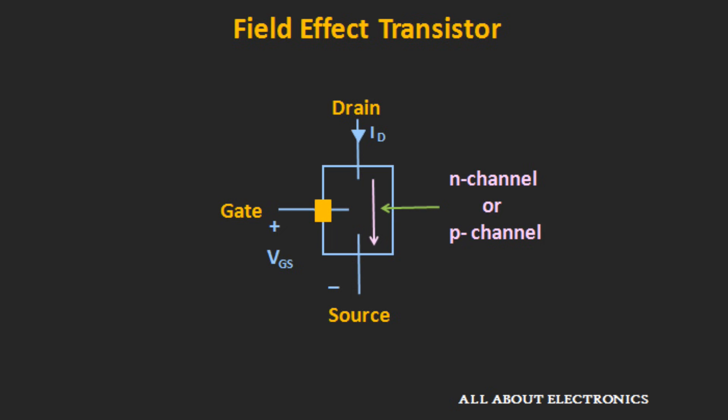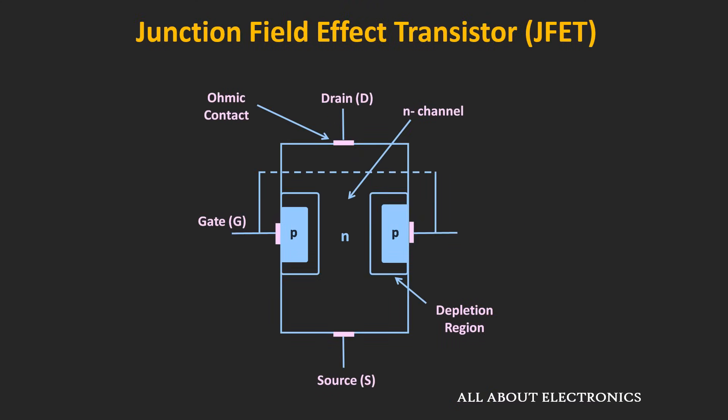In the FET, the gate terminal is placed very close to the channel so that it can control the flow of current through it. In the JFET, the gate terminal is provided using a P-n junction. In the N-type JFET, two small P-type regions are fabricated near the channel, forming a P-n junction. Whenever this P-n junction is reverse biased, the depletion region isolates the gate terminal from the channel, and only a small amount of reverse saturation current flows between the two regions. This reverse bias P-n junction isolates the gate from the channel, which is why this device is called the JFET or junction field effect transistor.